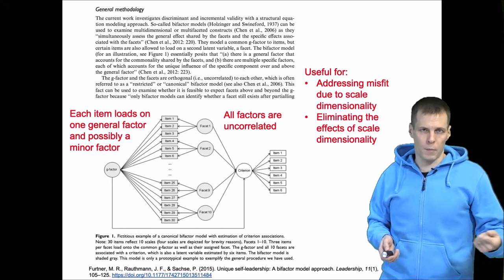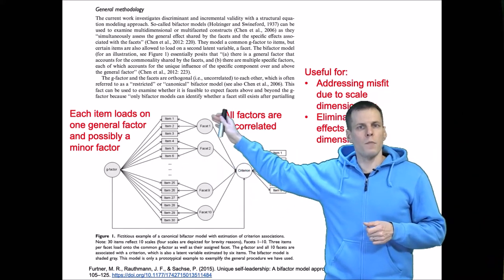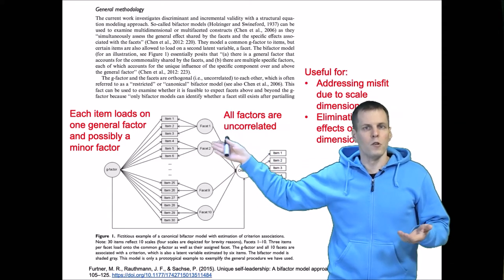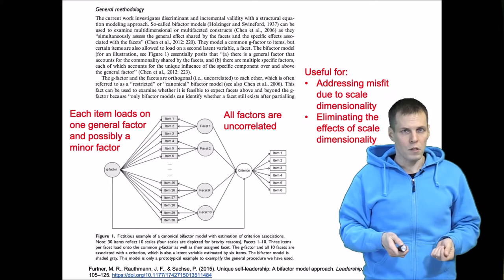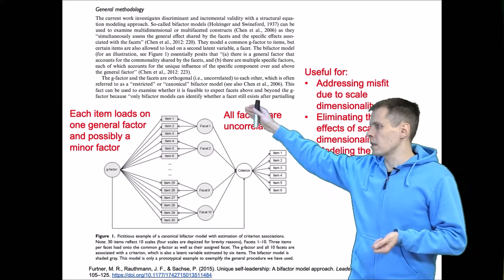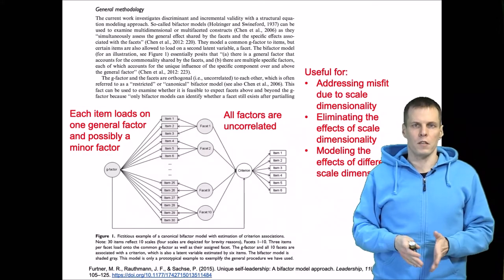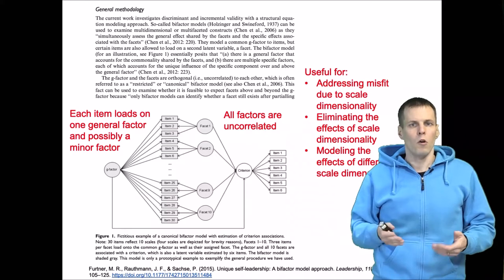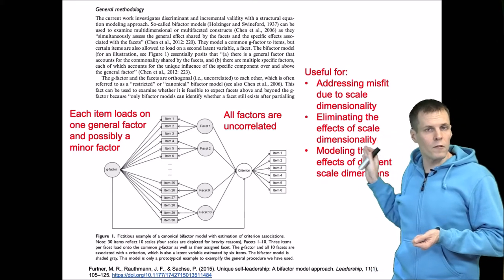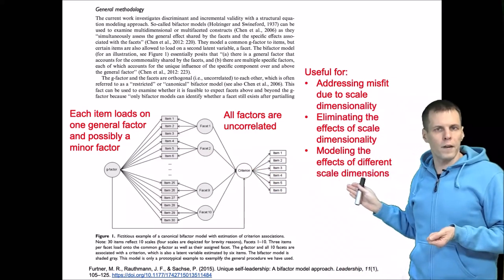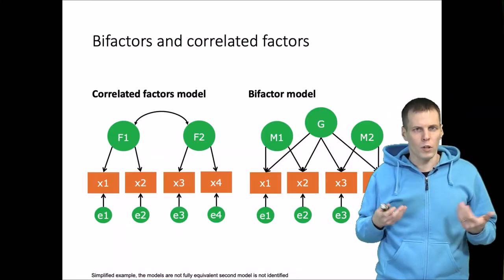There are two different ways you can apply or interpret results from bifactor models. One is that you eliminate the dimensionality — quite often we are interested in the general factor and the minor factors are just measurement artifacts, where similar items in two different parts of the scale correlate. In other scenarios, the dimensions could be of theoretical interest, for example differentiating between product innovation, process innovation, and service innovation within an innovativeness scale.